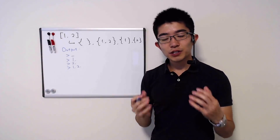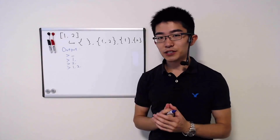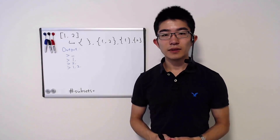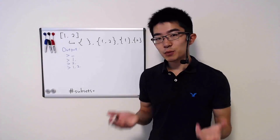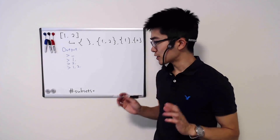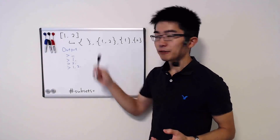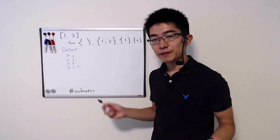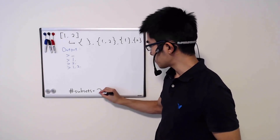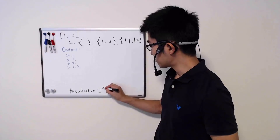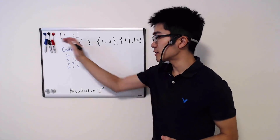So think about this problem for a second — pause the video right here and then come back. Now, the first thing you might consider is: how many subsets are there for the given array or set? The answer is there are two to the power of n subsets, where n is the number of items in the array.